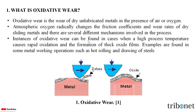Instances of oxidative wear can be found in cases when a high process temperature causes rapid oxidation and the formation of thick oxidative films. Examples are found in some metal working operations such as hot rolling and drawing of steels. In this figure we can see the oxidative wear on the metallic surface and also the debris formation.